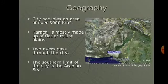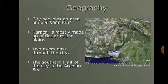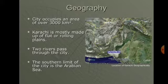Now let's discuss the geography of Karachi. The city occupies an area of over 3,000 km². Karachi is mostly made up of flat or rolling plains. Two rivers pass through the city: the River Malir and the River Lehari. The southern limit of the city is the Arabian Sea.